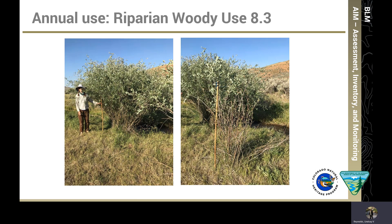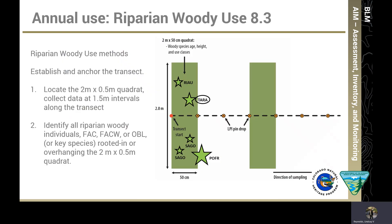The third and final annual use method is riparian woody use, Section 8.3. These methods have been recently updated, so make sure you are referring to a draft of the manual after May 2021, or a supplement from your project lead, to have the most current method. Riparian woody use data are also collected along the transect. Establish and anchor the transects if you have not already. The first step is to locate the 2m by 1.5m quadrat, which is the same quadrat where we measure woody species age and height classes, or woody structure, in the core methods for lentic AIM.